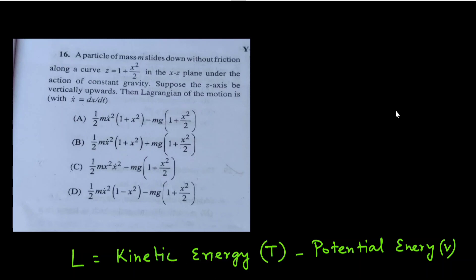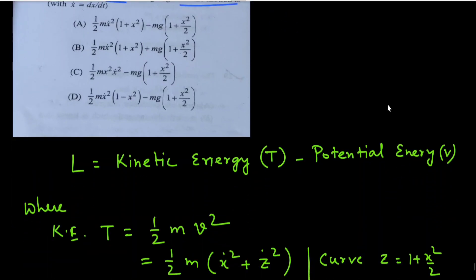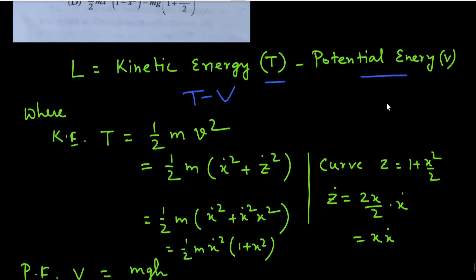Let's start with a question from classical mechanics. The question says: a particle of mass m slides down without friction along a curve z = 1 + x²/2 in the xz-plane under the action of constant gravity. Suppose the z-axis is vertically upwards. Find the Lagrangian of the motion. The general formula is L = T − V, kinetic energy minus potential energy.